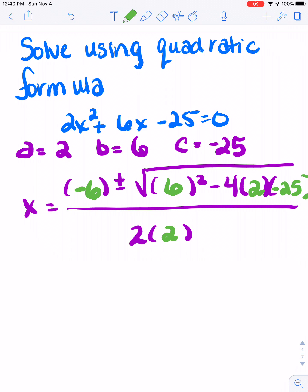Now if I want to go through and start to get this simplified, I know it's going to be -6 in the front, and I'm going to have to work with what's underneath here. On the bottom, 2 times 2 is going to give me 4. Now I want to focus on this part that's underneath here. So if I were to do 6² - 4(2)(-25), I would end up with 136.